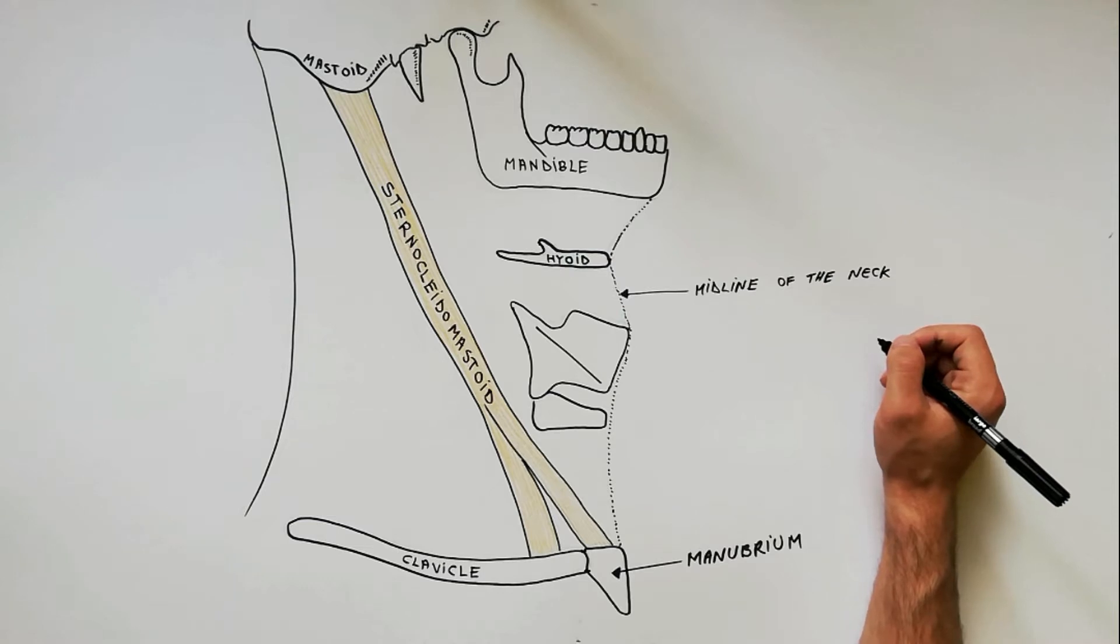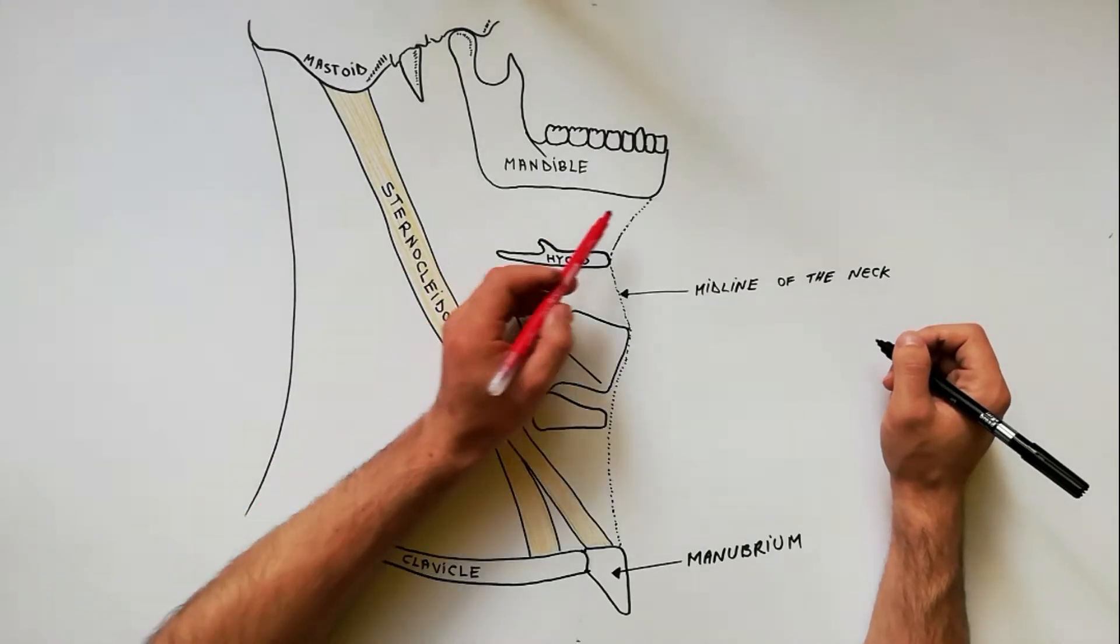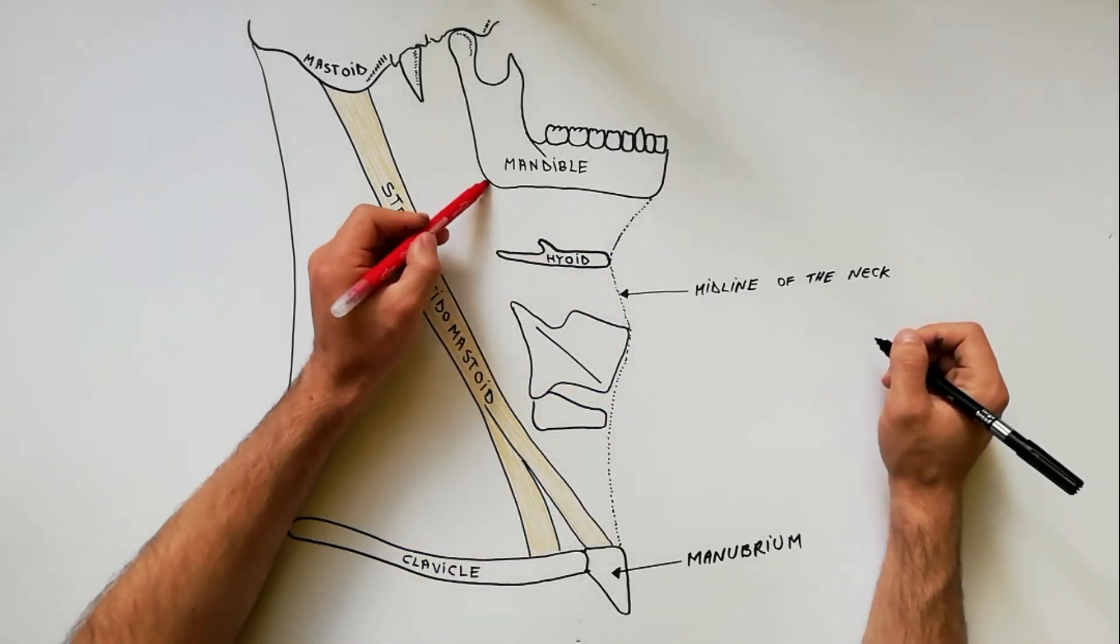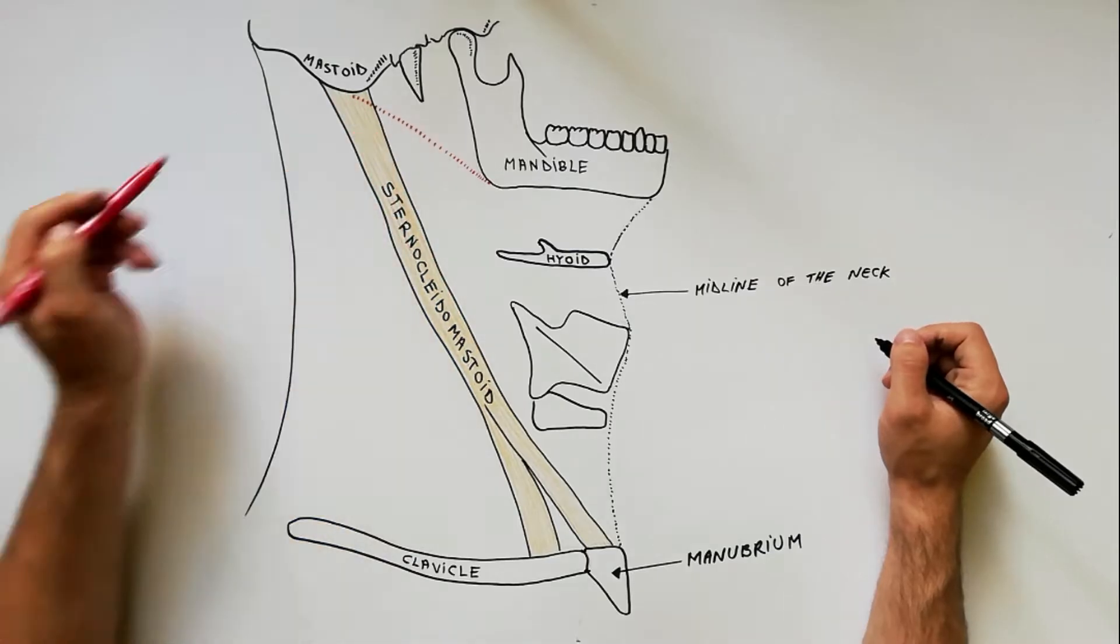The superior boundary or the base of the triangle is represented by the lower border of the body of the mandible and the line extending from the angle of the mandible to the mastoid process.